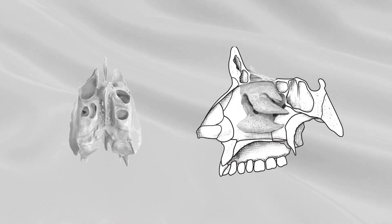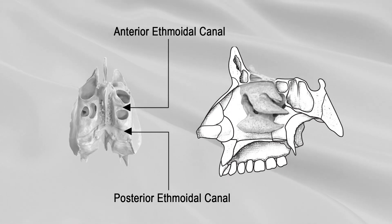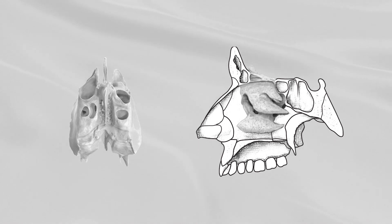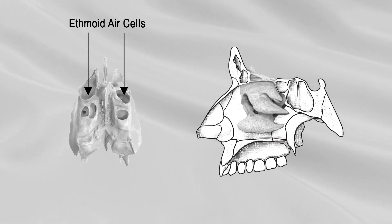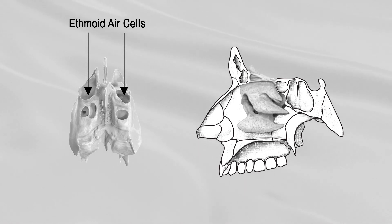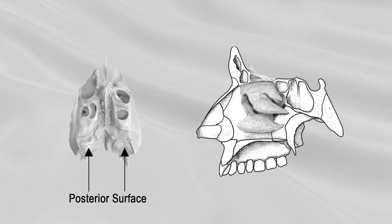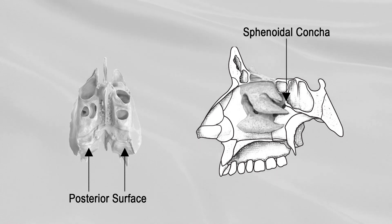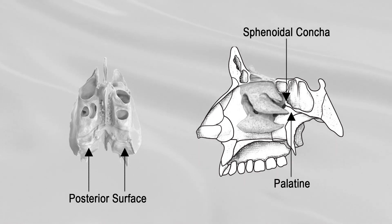The upper surfaces are crossed by the anterior and posterior ethmoidal canals and open on the inner wall of the orbit. This surface presents a number of half-broken cells, which, when united with corresponding half-cells on the margins of the ethmoidal notch of the frontal bone, complete the ethmoidal air cells. The posterior surface presents large irregular cellular cavities, which are overlapped and completed by the sphenoidal concha and orbital process of the palatine.